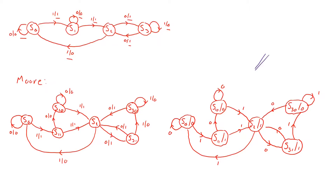This is our Moore graph corresponding to the original Mealy graph — they produce the same output sequence for the same input sequence. However, the Moore graph outputs the sequence one time unit delayed compared to the Mealy graph, and we needed to add two extra states. To go backwards from Moore to Mealy, we would take the outputs inside the states, place them on the entering edges, and then apply the reduction algorithm to obtain the minimized Mealy machine.